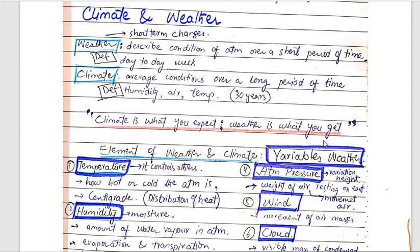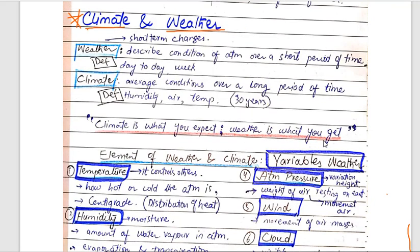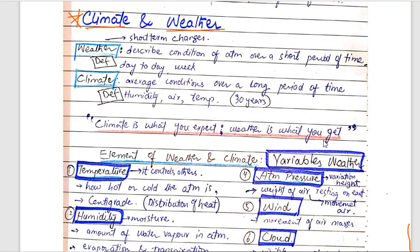Our next topic is about climate and weather. We have discussed the comparison between climate and weather. Now we are going to discuss what climate is exactly and what weather is exactly. We will read the factors — the variables that affect both. The factors are the variables that affect both.